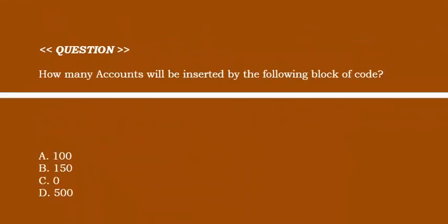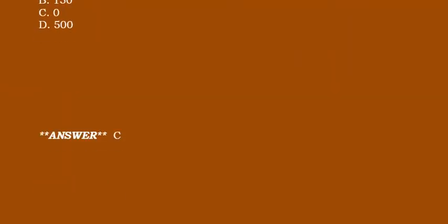How many accounts will be inserted by the following block of code? Option A: 100. Option B: 150. Option C: 0. Option D: 500. Correct answer is Option C.